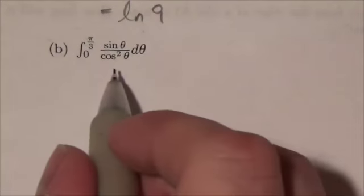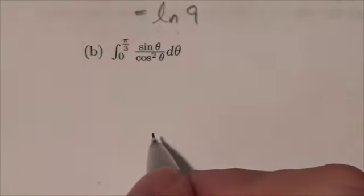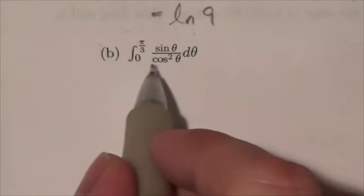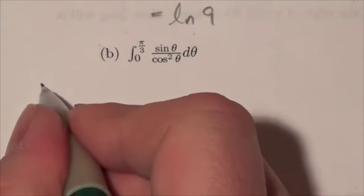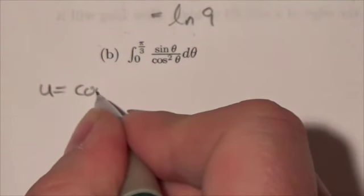Okay, I just got to integrate this definite integral here. I'm going to do substitution here. I see in the denominator this cosine squared. I'm going to let u equal the cosine of theta.